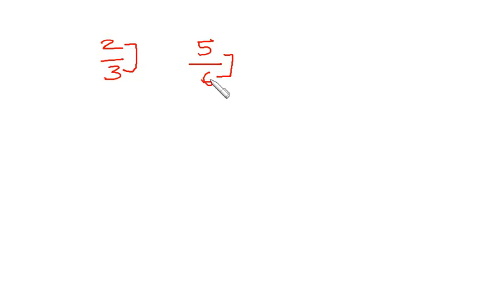So if the difference between numerator and denominator is same, then the fraction which is having higher numerator or higher denominator will be bigger. You just have to see whether the numerator is higher. In this case, 2 is less than 5, that means 5 is greater than 2, so the fraction 5/6 will be greater than 2/3.